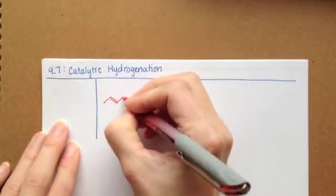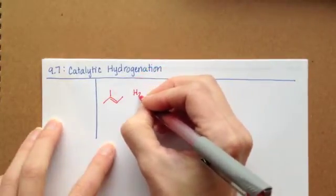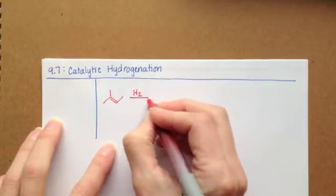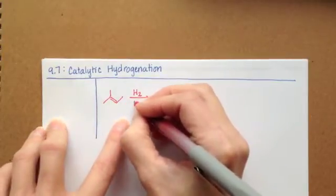if we take this particular alkene, we use the hydrogen molecule H2. This molecule is catalyzed, typically with platinum.